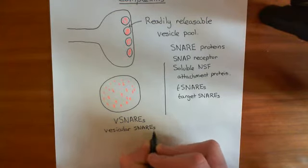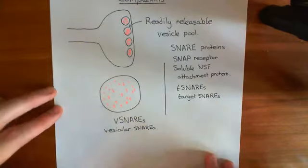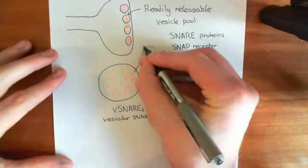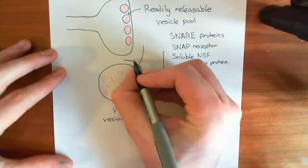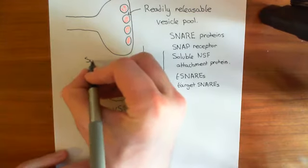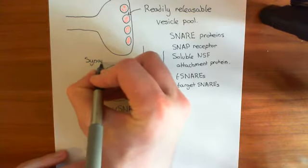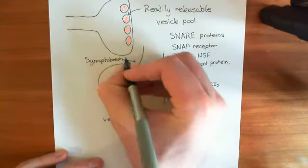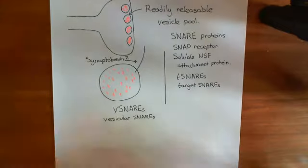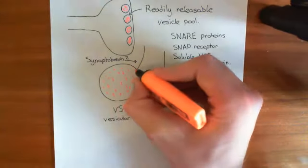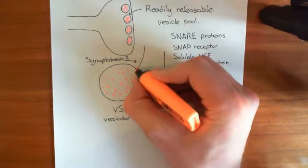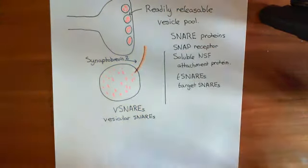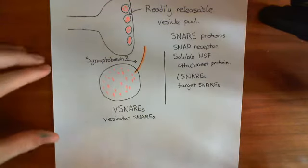The V-SNARE is a protein known as synaptobrevin-2. This protein has a membrane-spanning portion and then an alpha helix which extends into the cytoplasm of the cell. That's the only V-SNARE, the only vesicular SNARE.